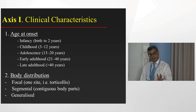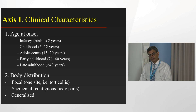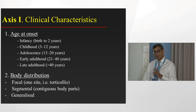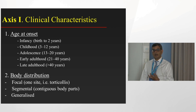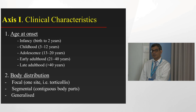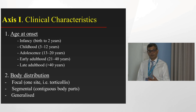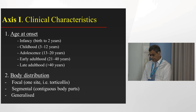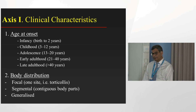Once we've decided we are dealing with dystonia, we have to look at certain other things — we look at the clinical characteristics. The reason we are doing this is that we want to arrive at the etiology. Dystonia is just a symptom or a sign, but we want to know what is the underlying etiology, because that is very important for future treatments and for the prognosis. In this context, we look at the age of onset — it's very important for us.